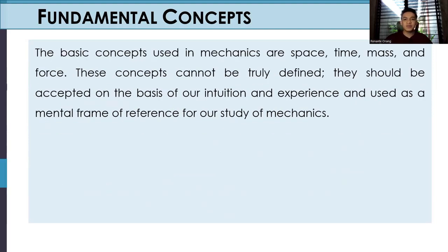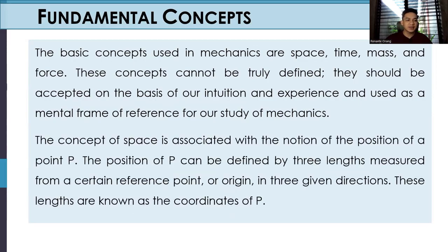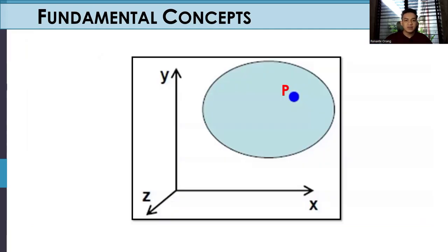The basic concepts used in mechanics are space, time, mass, and force. These concepts cannot be truly defined. They should be accepted on the basis of our intuition and experience and used as mental frame of reference for our study of mechanics. The concept of space is associated with the notion of position of a point P. The position of P can be defined by three lengths measured from a certain reference point or origin in three given directions. These lengths are known as the coordinates of P. We have here our diagram. We have z-axis, y-axis, and x-axis. In order for us to analyze our certain object, we need first to locate its location.